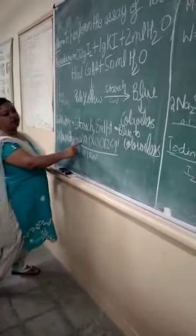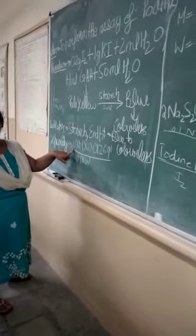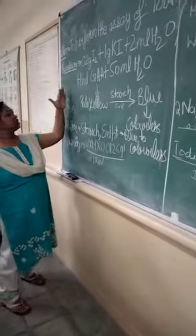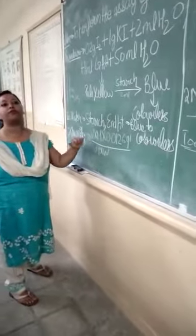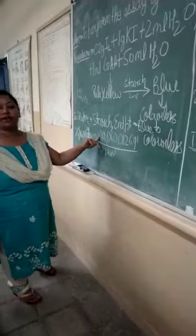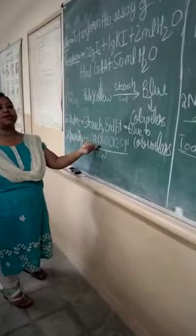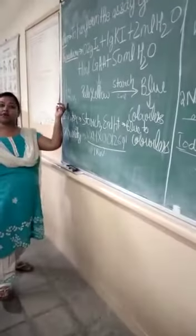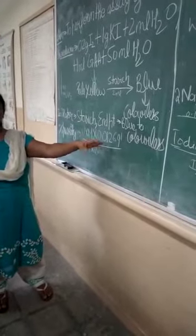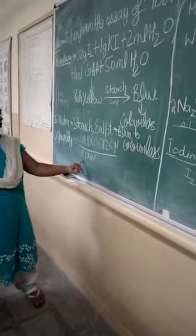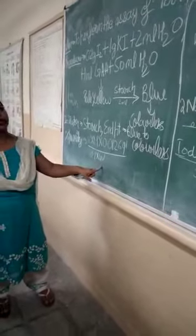V stands for volume of sodium thiosulfate which was taken in the burette. We will take the mean of 3 readings — that will be our volume of sodium thiosulfate consumed. M is the normality of sodium thiosulfate. This is the factor of iodine, which will come from the molecular weight: 0.1 into W. W is the weight of iodine which you have taken in the iodine flask, that is 0.2 gram.